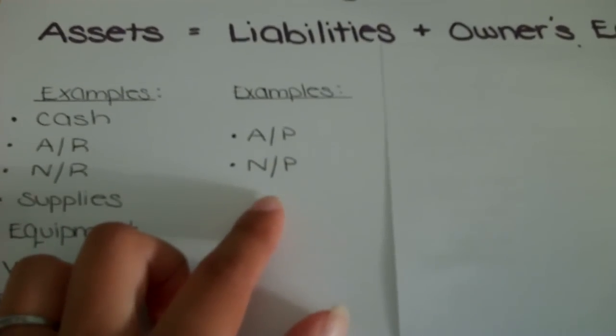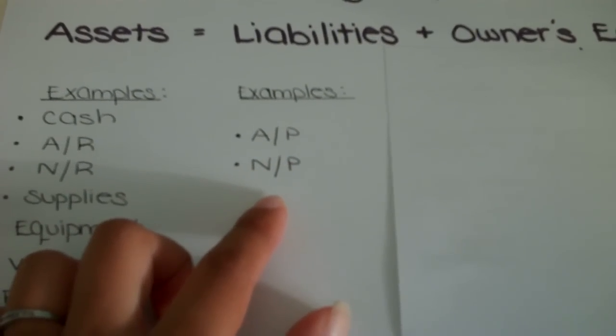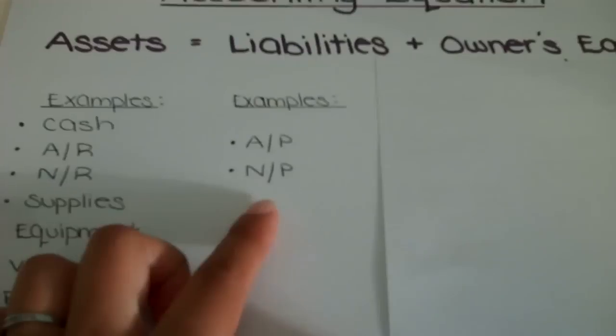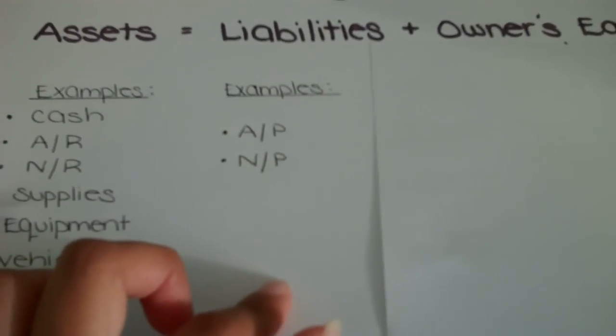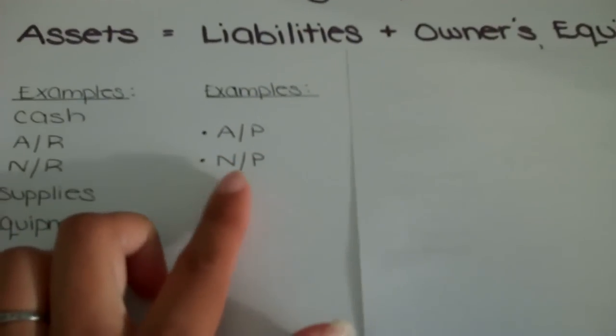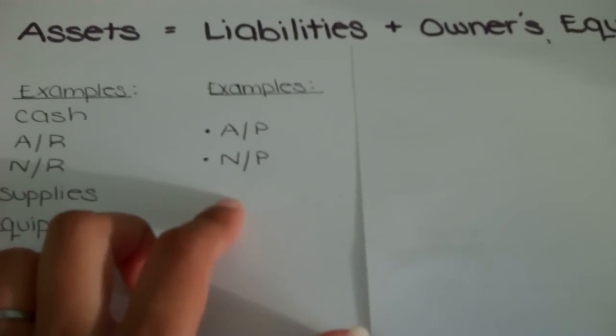Notes payable are a larger amount, and there tends to be interest involved. We will cover more types of examples of liabilities in later chapters, but for this chapter, these are the two main examples you'll be seeing.